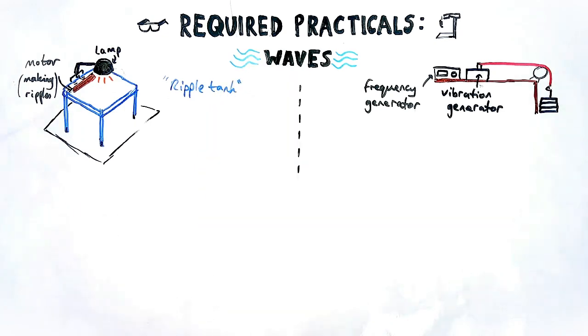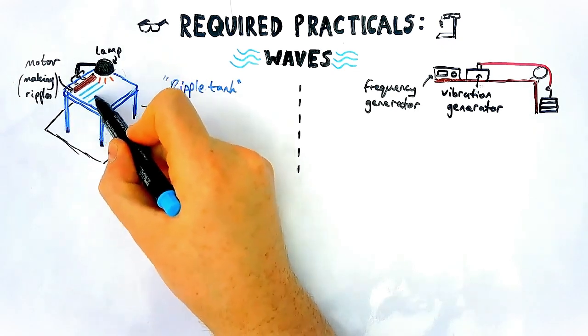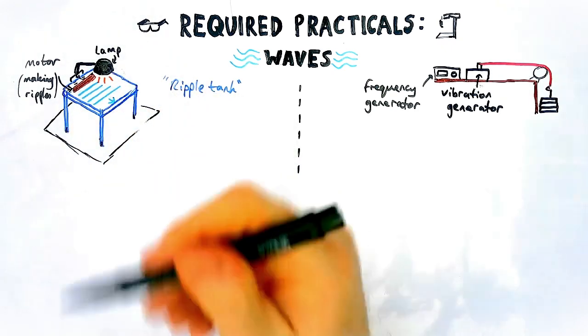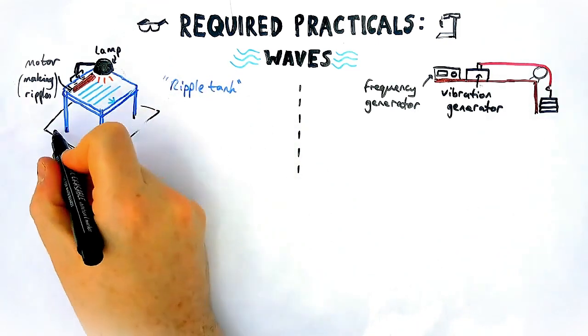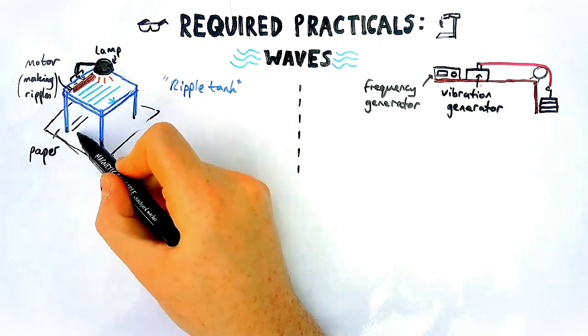One is water waves using a ripple tank. You have a lamp above a tank of water and a motor with a straight edge that makes ripples that go from one side to another. The light's purpose is to shine light underneath so you can see the ripples on a piece of paper below and you can measure them.